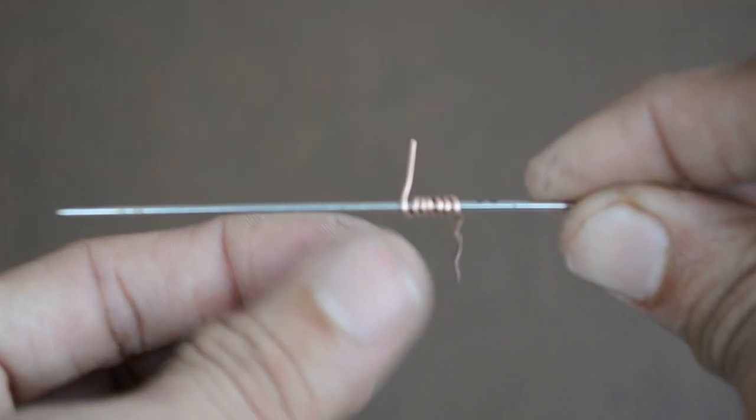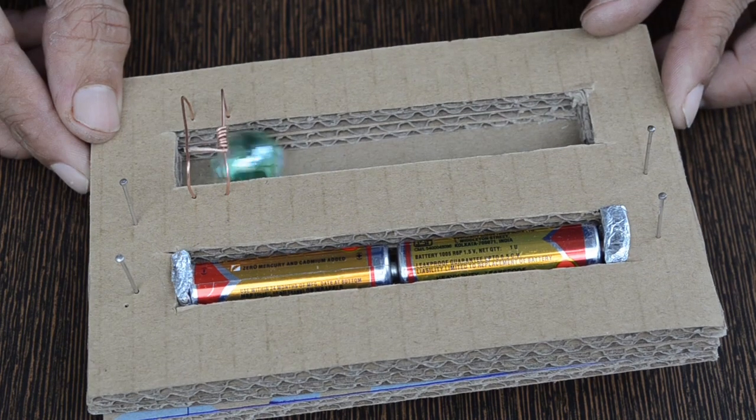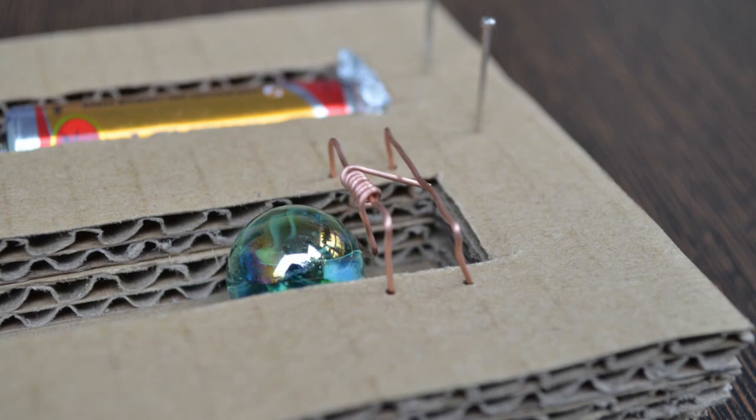This wiring ensures that the circuit is closed when the marble moves towards it and the circuit is broken when the marble moves away from it.